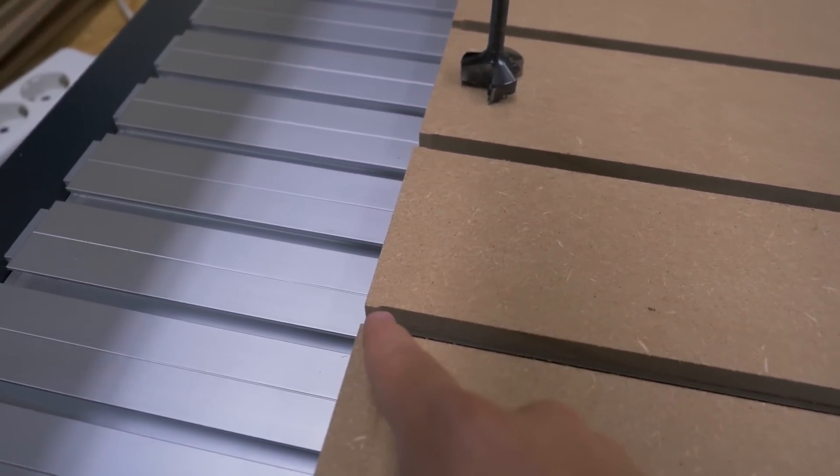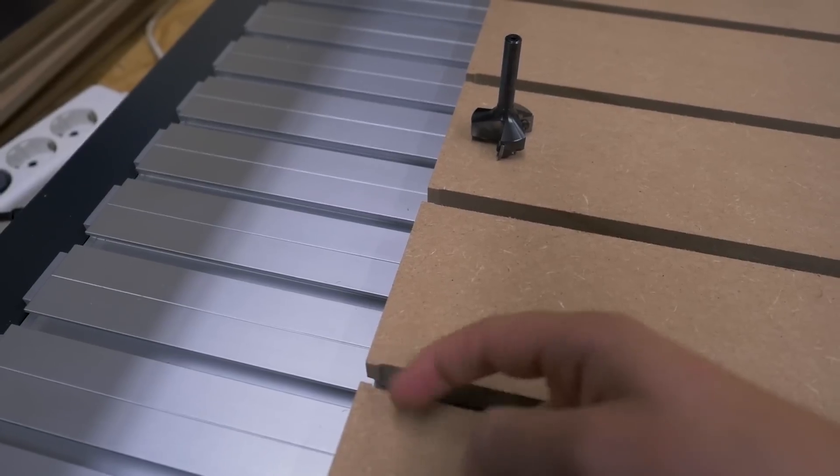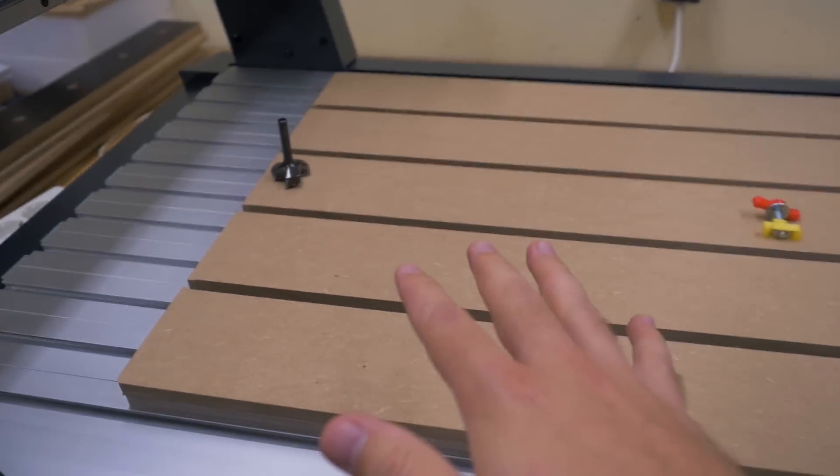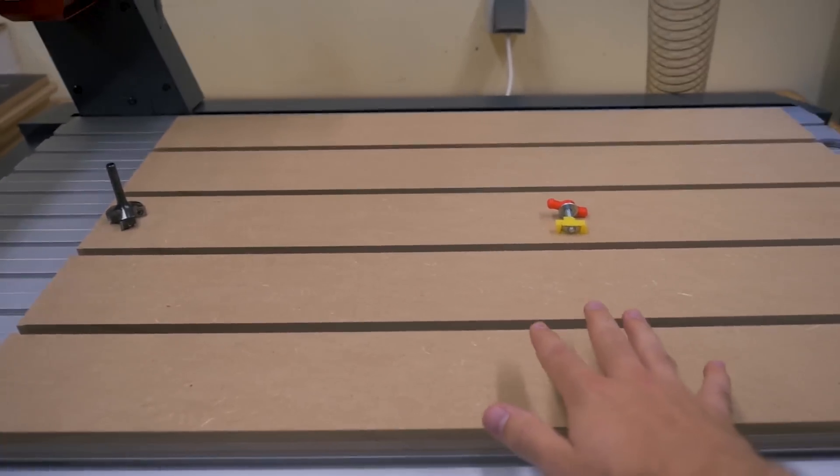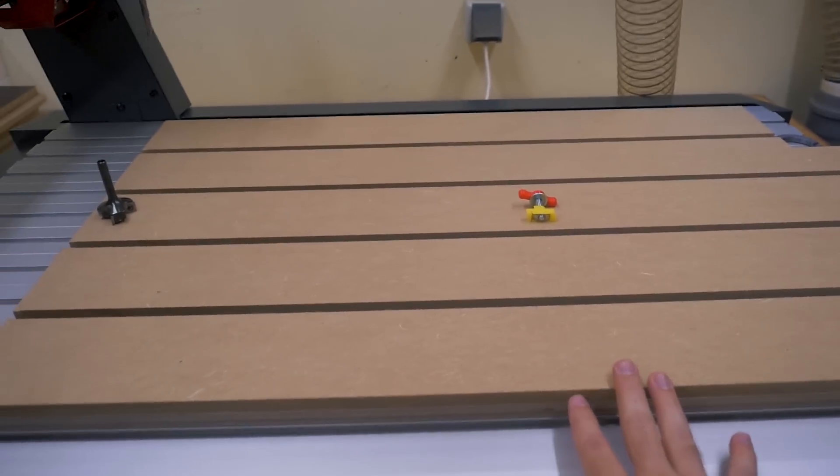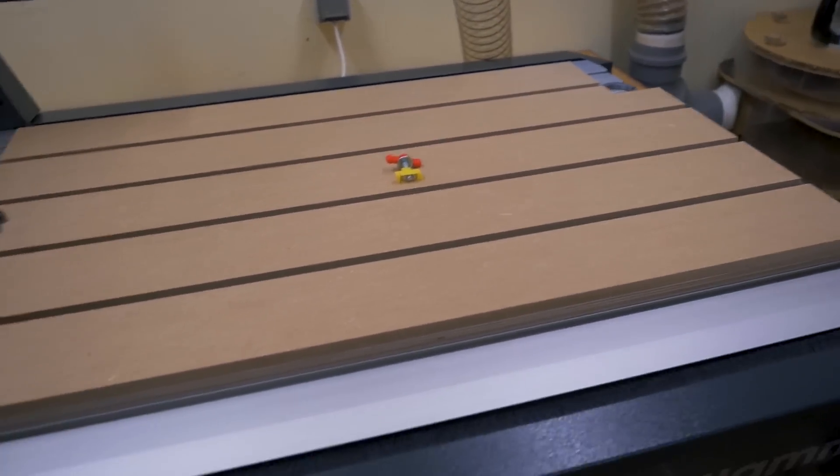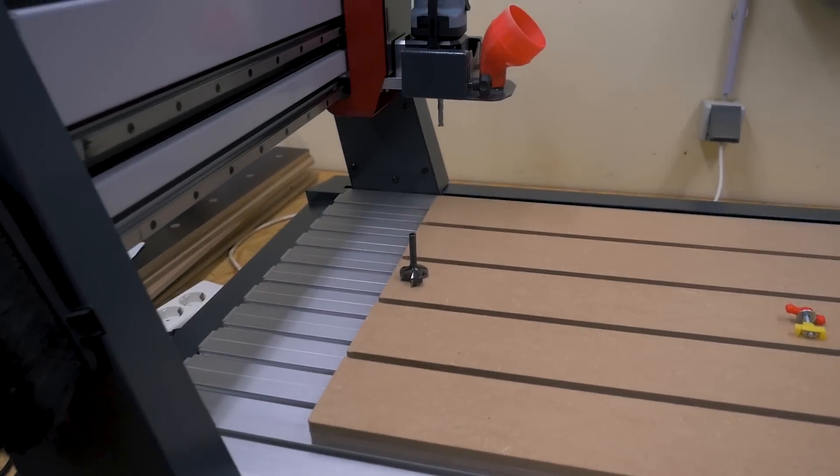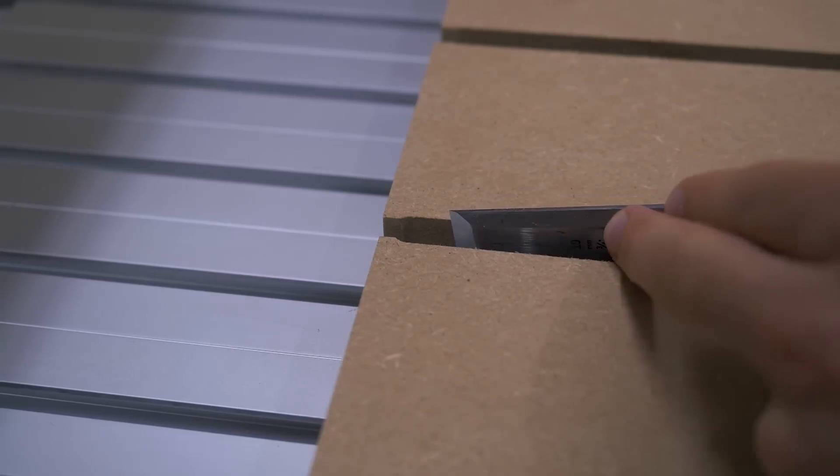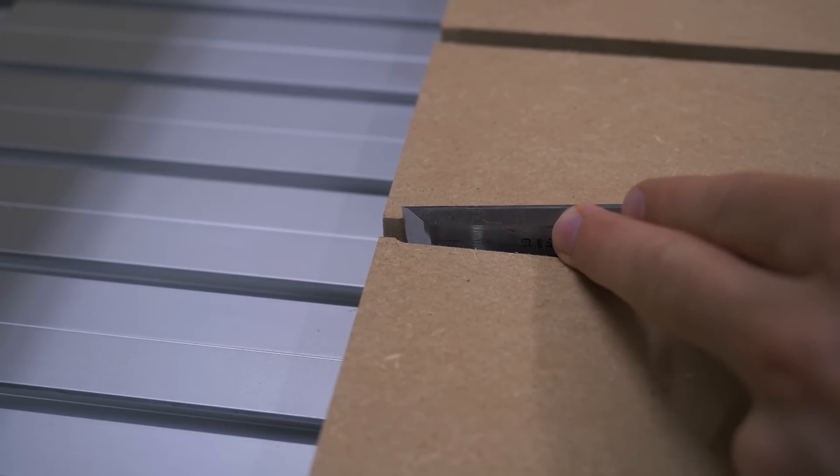But that's also not really a problem because I can just take care of that with a chisel. And well, the next time I have to cut the slots is when I have to replace the whole spoilboard or the MDF on top. And that will take quite a long time. So I'm okay with cleaning that up with a chisel. But of course it would have been smarter to just size the spoilboard so the machine can reach every spot on its own.